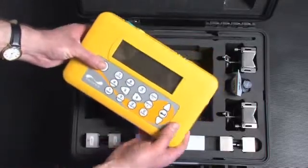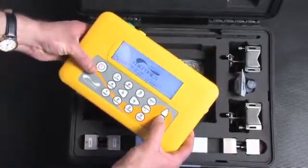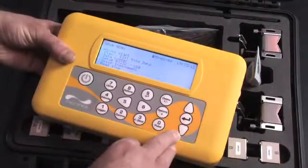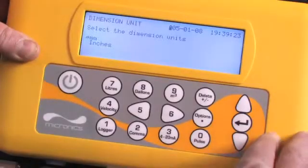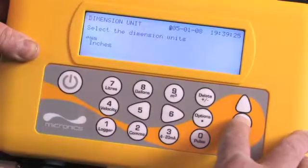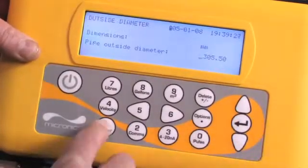To begin the procedure, switch the unit on by pressing the power key and press enter to get to the main menu. Select quick start and follow the on screen menu to program the unit. Select either millimeters or inches and press enter.